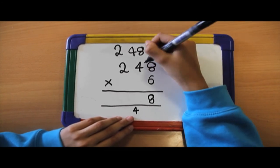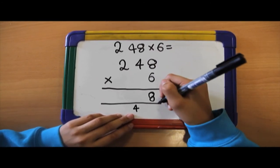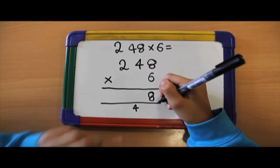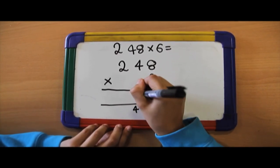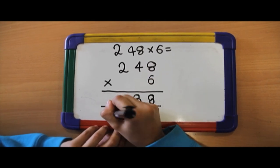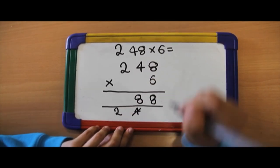Now, you will do 6 times 40 which is 240. You just add the 40 here which will be 280. So just put the 8 here, carry the 200 and cross out the 4.